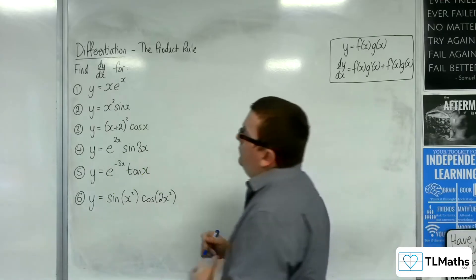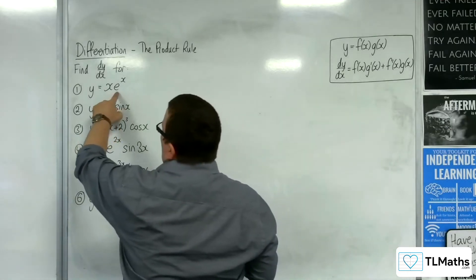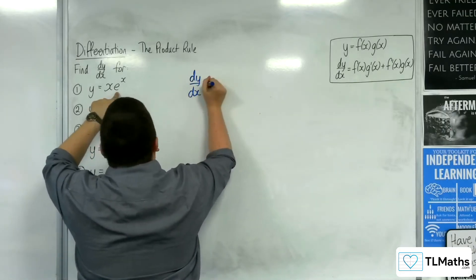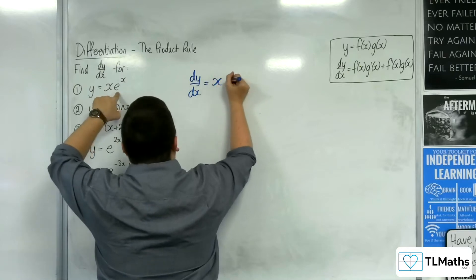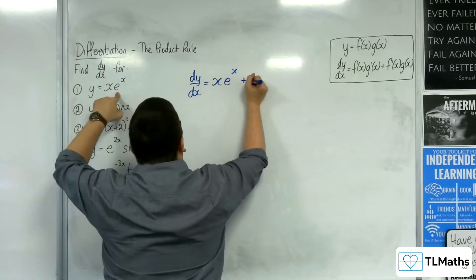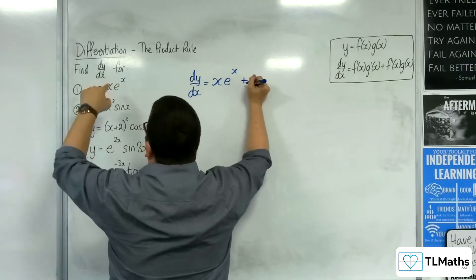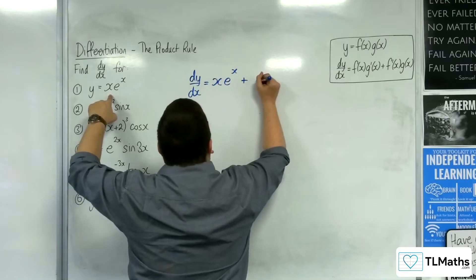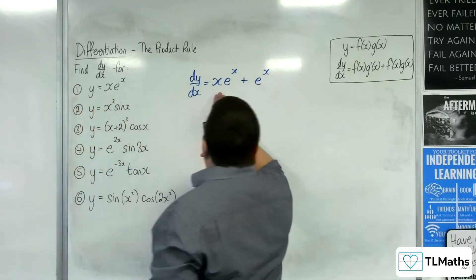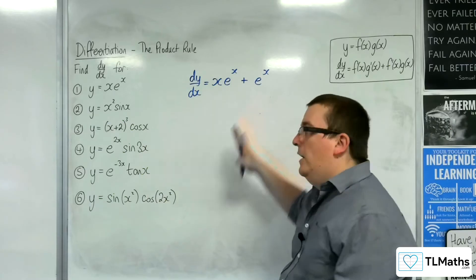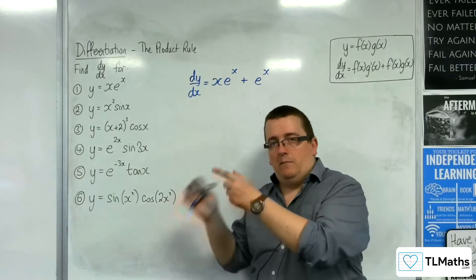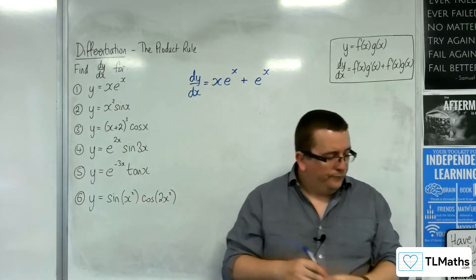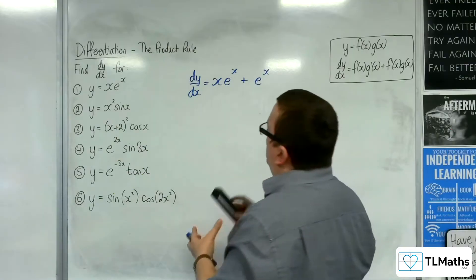Let's start off with number one. So, y equals x e to the x, so dy by dx is the first — x times the derivative of the second. E to the x differentiates to e to the x, plus the second times the derivative of the first, so e to the x times 1, which is just e to the x. So, x e to the x plus e to the x will be my derivative. You can then factorise that and pull the e to the x out, but I won't bother doing that at this stage.